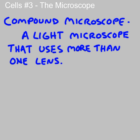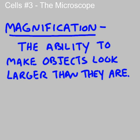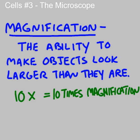Let's get some vocabulary down. A compound microscope is a light microscope that uses more than one lens. Then there's magnification, which is the ability to make objects look larger than they actually are. The lenses on our microscope tell you the magnification — 10x means 10 times magnification, or that lens is making things look 10 times bigger.